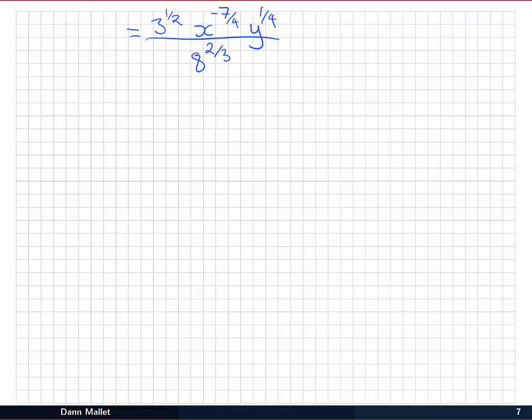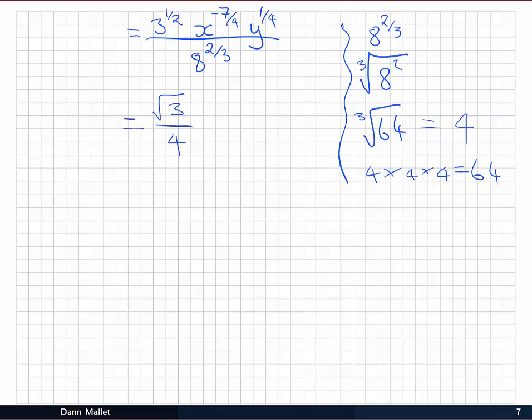And I've just rewritten that again over on the next page to give myself some room. Now getting that far, that's a pretty good effort. There's a lot of messing around in there. So getting to that is pretty well done. Now I can see there are a couple of other things I can do in here though. So if I've got 8 to the 2 on 3, that's the same as the cube root of 8 squared, or the cube root of 64. And I know that 4 times 4 times 4 is 64. Okay, so the cube root of 64 must be equal to 4. So I can say I've got the square root of 3 on the top over 4 on the bottom. I'm going to put this negative power down underneath. So I'm going to have x to the positive 7 on 4, and then leave up the top y to the 1 on 4. And that I'd be pretty happy with as a result for that question.